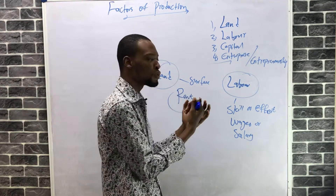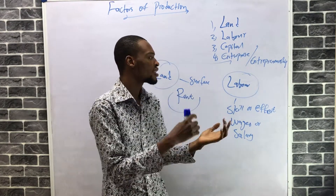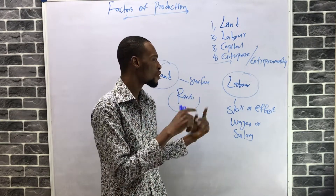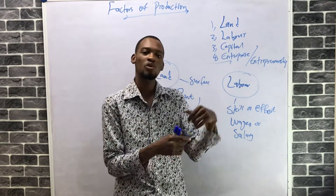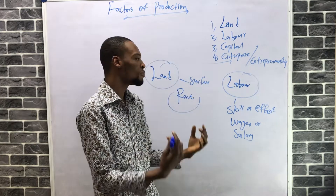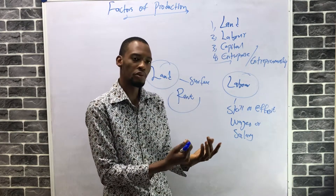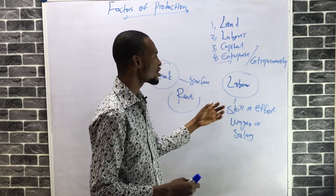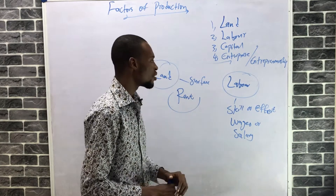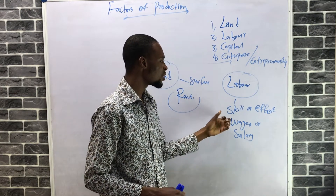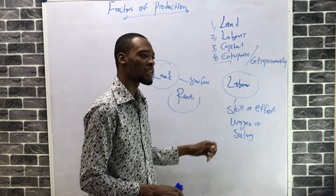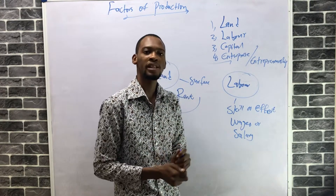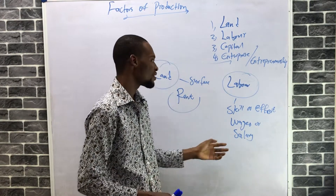Unlike land, labor is mobile — you can move laborers from one place to another, or change from one skill to another. So labor is another important factor of production. When you are paying for laborers, you are not buying the laborer; you are paying for their service.